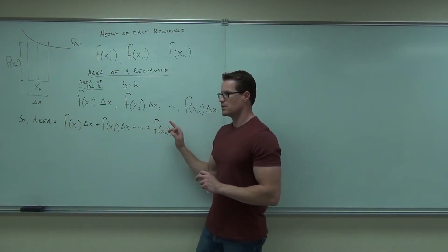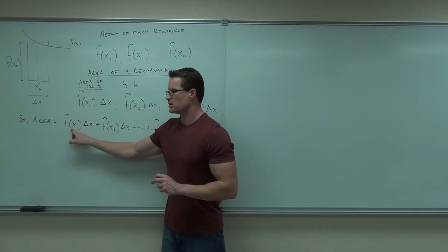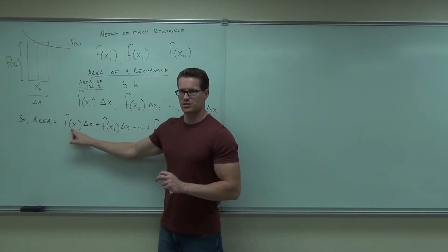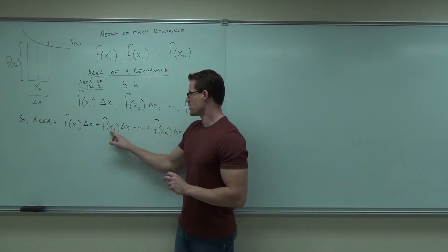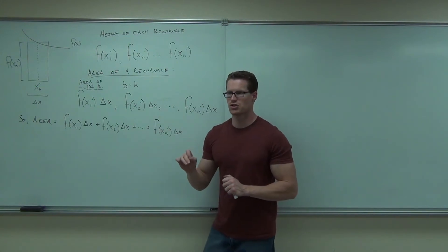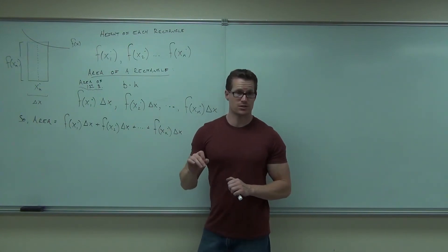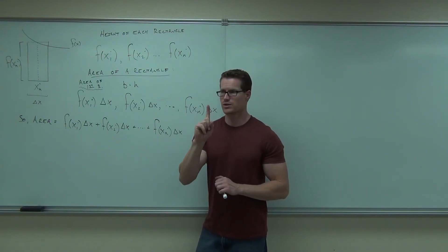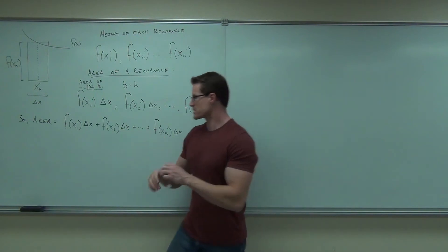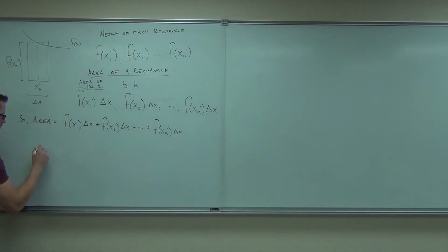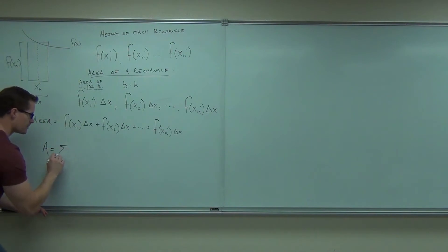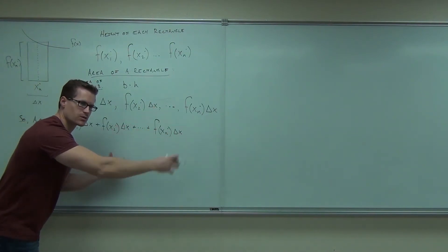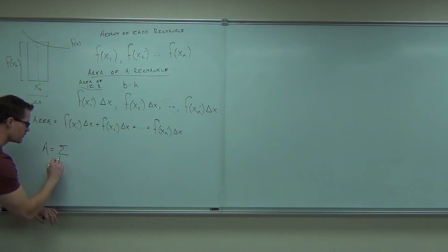Does the f change? No. Does the x change? The index of the x changes — the first one, the second one, the third one, the fourth one — so that's really the only thing we want to change. Where does the index start? 1. Where does the index end? At n. So this area says I'm going to add up areas of rectangles, going from k equals 1 to n.